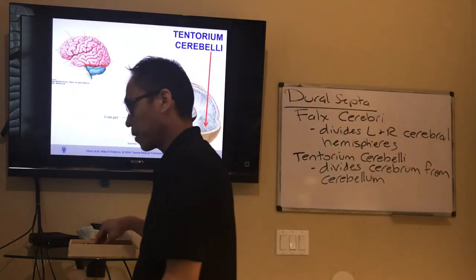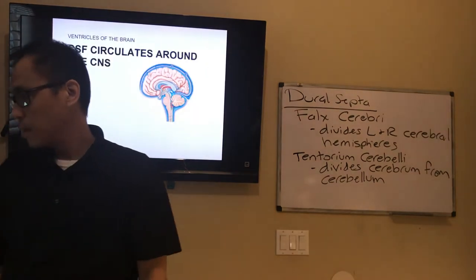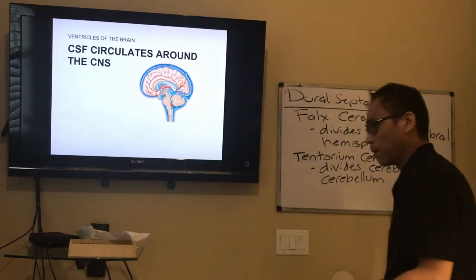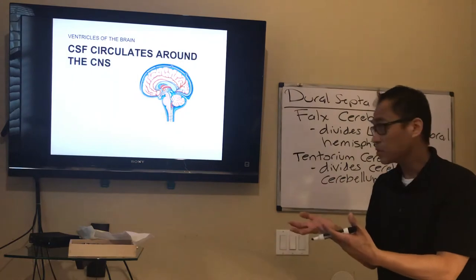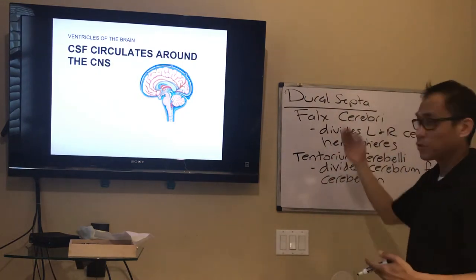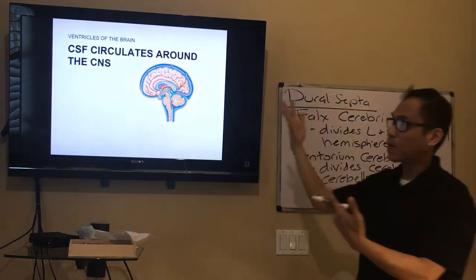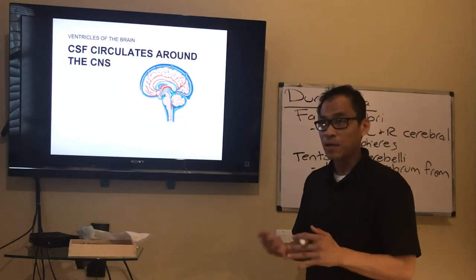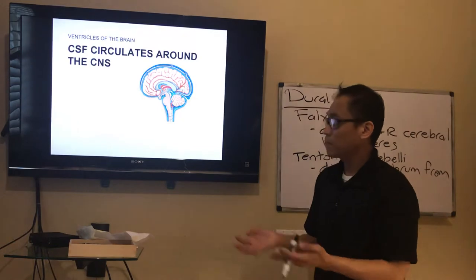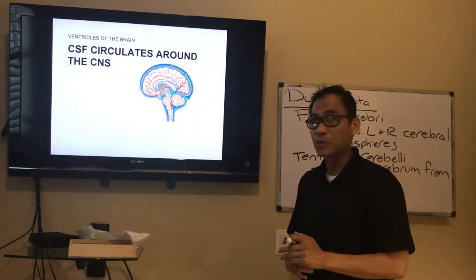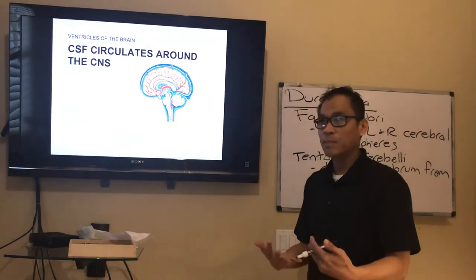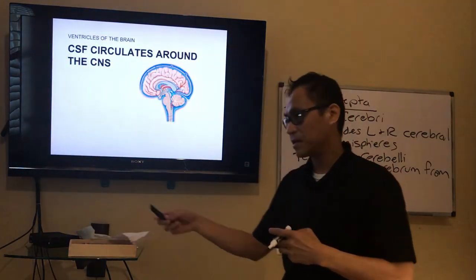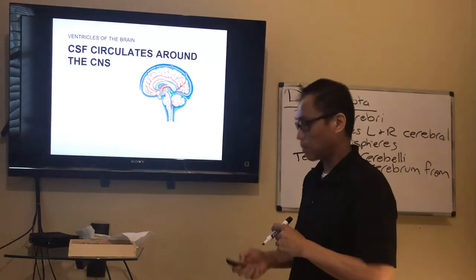Moving on to the next thing associated with the brain: the CSF. We've talked about how the brain sits in the cranial base, and about connective tissue dural septa that separate parts of the brain. Now we'll talk about the CSF that bathes and protects the brain. The CSF is a filtration of blood plasma — it has all the essential nutrients you need from blood. Whole blood is toxic to neural tissue, so we filter out the plasma to get the cerebral spinal fluid, CSF.